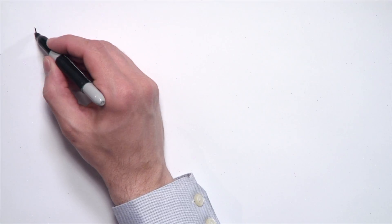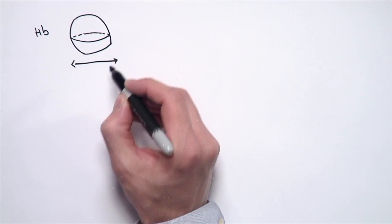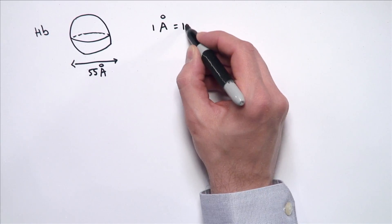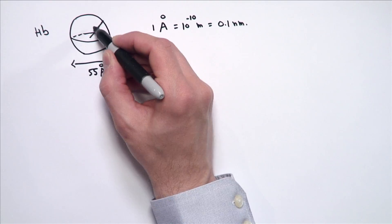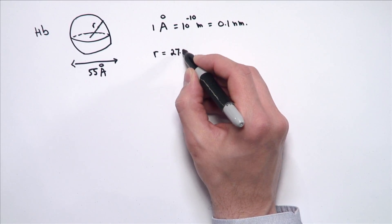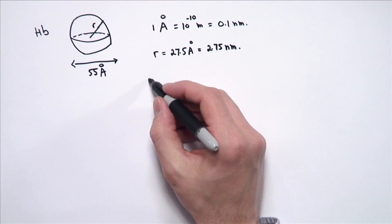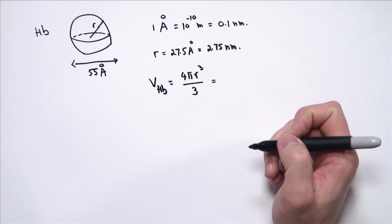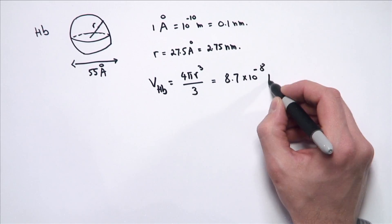Finally, let's see how the size of a hemoglobin molecule compares to the size of a cell. We're told hemoglobin is roughly spherical with a diameter of about 55 angstroms. Recall that 1 angstrom is 10 to the minus 10 meters, or 0.1 nanometer. So our radius is half the diameter: 27.5 angstroms, or 2.75 nanometers. The volume of a hemoglobin molecule is 4 pi r cubed over 3, plugging in 2.75 nanometers, which comes out to 8.7 times 10 to the minus 8 cubic microns.